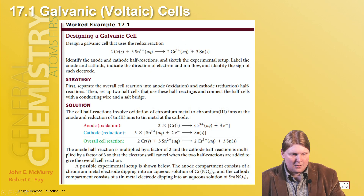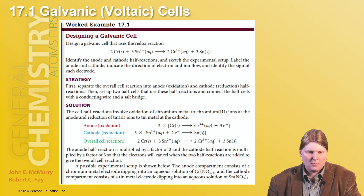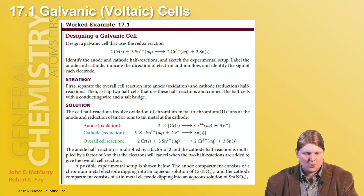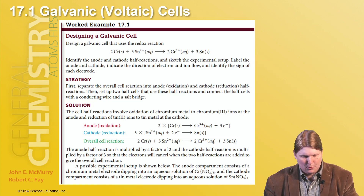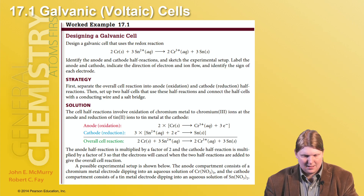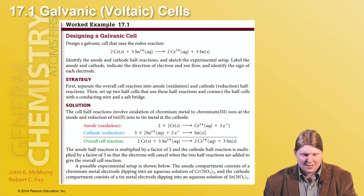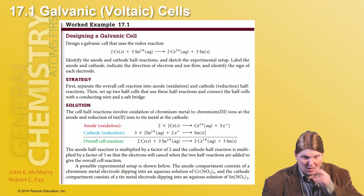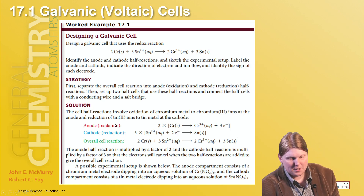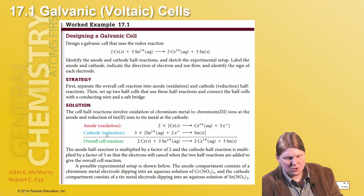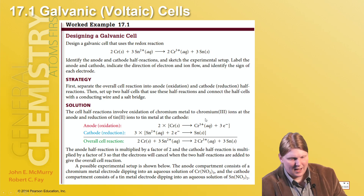Designing a galvanic cell: we want to use a given redox reaction. The first question is what's oxidized and what's reduced. The chromium is oxidized because it loses electrons, and the tin is reduced because it gains electrons. The chromium loses three electrons and the tin gains two for each one, but it's balanced already. The number of electrons lost has to equal the number of electrons gained. There must always be at least one oxidation and one reduction for every redox reaction.